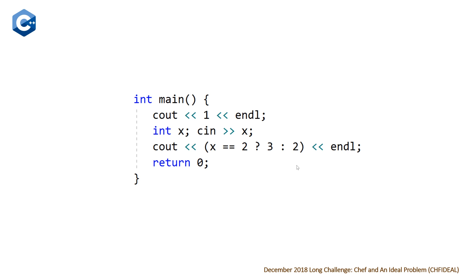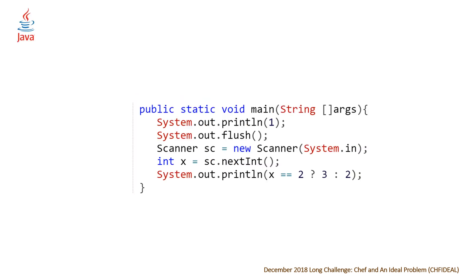This is more of a tricky problem in terms of figuring out what you need to guess, but even if you don't know about the Monty Hall problem, you might have been able to figure that out just by looking at the example. Moving on to our Java solution — as always it's a little bit more verbose, but we're doing the exact same thing: outputting one, then flushing our output, then reading in x, and then based on x, outputting three or two.